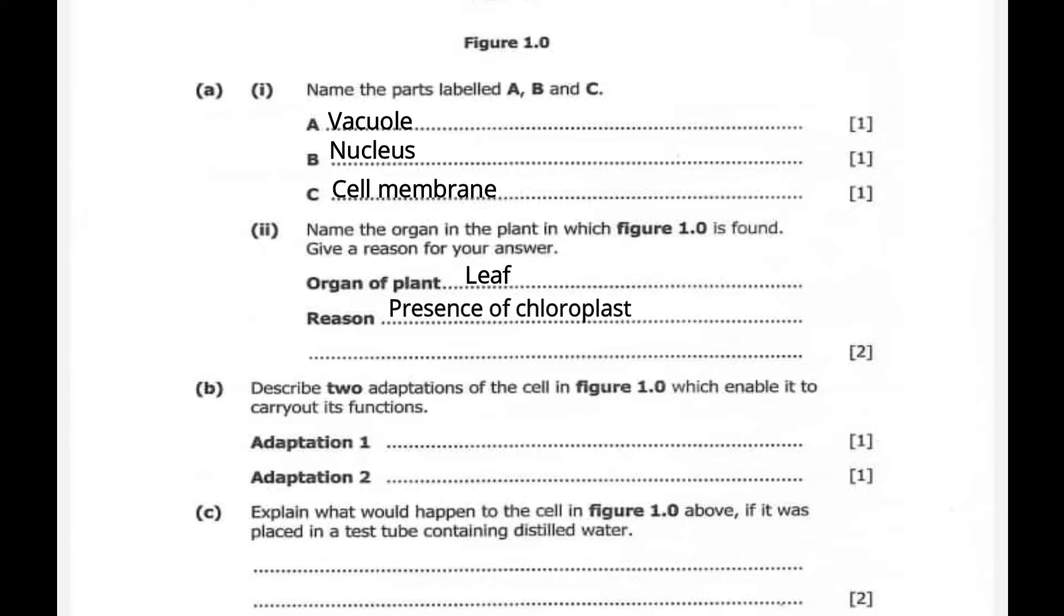Question 1b. Describe two adaptations of the cell in figure 1.0 which enable it to carry out its functions. So adaptation 1 will be presence of many chloroplasts. Adaptation 2 will be rectangular shape which increases its surface area.